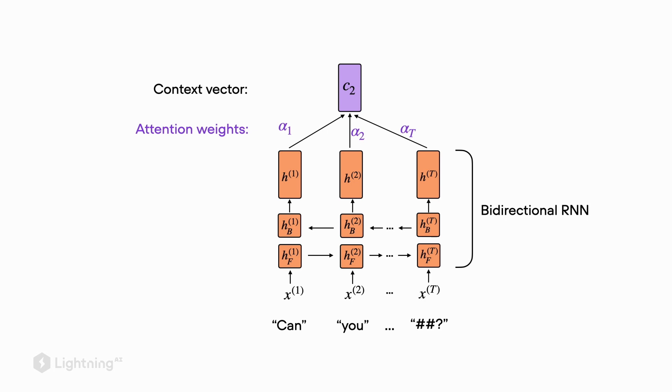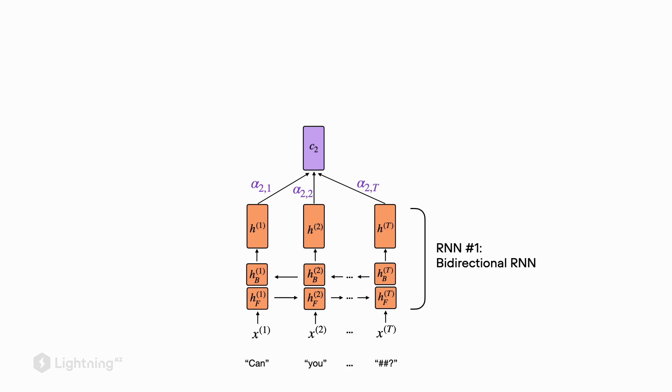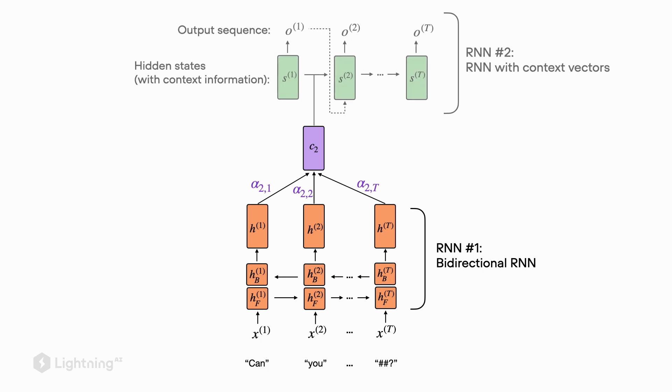The attention mechanism for RNNs is actually pretty complicated, and we just covered one part of it: the first recurrent neural network, the bi-directional RNN. This first part, RNN number one, is used to compute these context vectors. Then there's also the second part, RNN number two, which actually generates the outputs, the translated sentence.